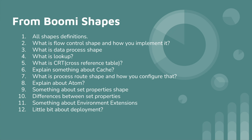In Boomi we have four types of set properties: dynamic document property, document property, process property, and dynamic process property. They can ask any differences between two properties — for example, the difference between dynamic document property and dynamic process property, or between process property and dynamic process property, or between document property and dynamic document property. You have to clearly answer the differences between each property.